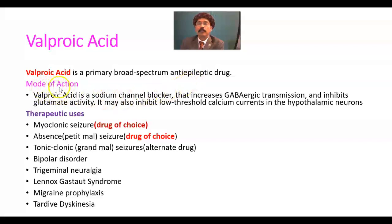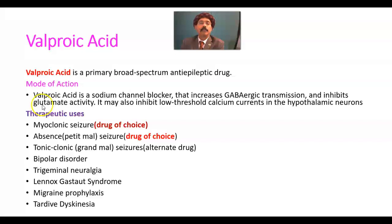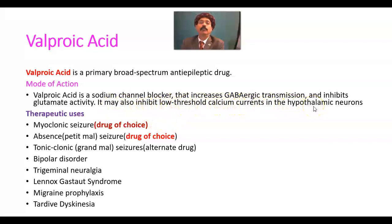What is the mode of action of valproic acid? Valproic acid is a sodium channel blocker. It increases GABAergic transmission and inhibits glutamate activity. Glutamate is a stimulatory neurotransmitter, while GABA, gamma-aminobutyric acid, is an inhibitory neurotransmitter. It may also inhibit low-threshold calcium currents in the hypothalamic neurons. So there are multiple modes of action.